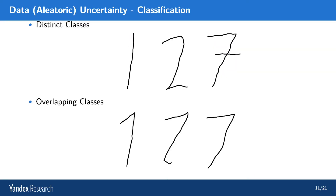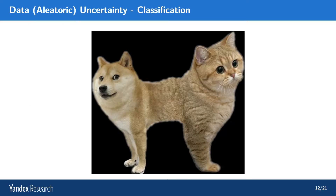An example on hand-drawn digits: on the top you have digits 1, 2, and 7 drawn distinctly — they're easy to separate. On the bottom you have the digits 1, 2, and 7 written in a very messy way, such that they are hard to discriminate. This is an example of data or aleatoric uncertainty. For classification, data uncertainty is when you have two or more classes which are overlapping and you cannot distinguish them — just like this cat-dog image. It's both a cat and a dog, but it's neither.